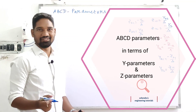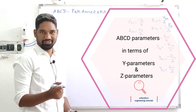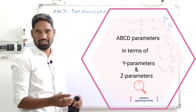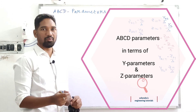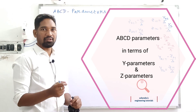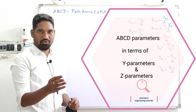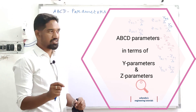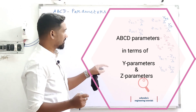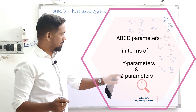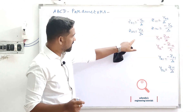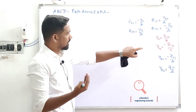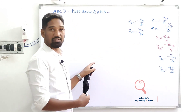Hi, yet another important video from network analysis on two-port networks — all about deriving the expression for ABCD parameters, also known as transmission parameters, in terms of Z parameters and Y parameters. In my previous video I've done this derivation, so I am making use of those same derivations over here.